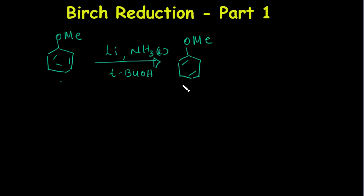When you have an electron-donating group like this methoxy group, you get one kind of product. When you have an electron-withdrawing group, you get a different product — I will explain that mechanism in Part 2, the next video. In this video, I'm going to focus on the case where you have an electron-donating group, and I will explain the mechanism for that reaction.